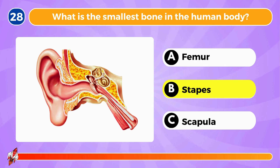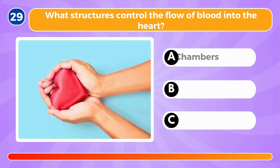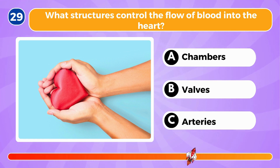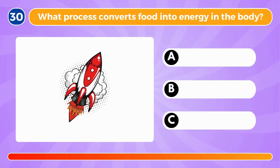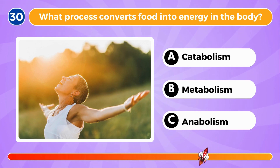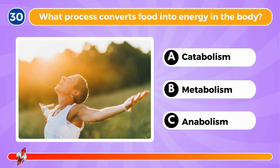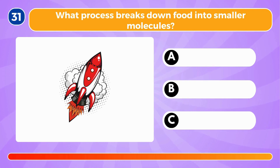What is the smallest bone in the human body? The smallest bone is the stapes. What structures control the flow of blood into the heart? They're called valves. What process converts food into energy in the body? The process is called catabolism.